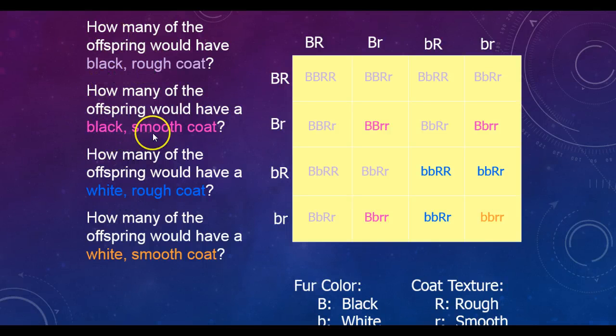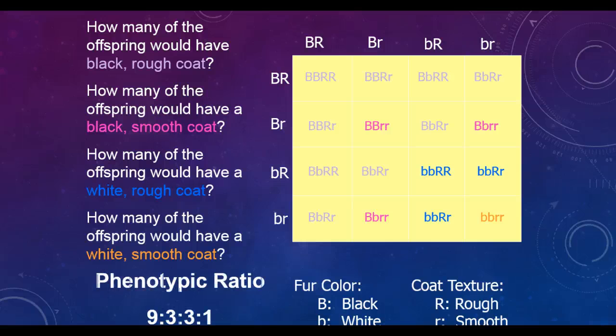We have black rough coat, black smooth coat, white rough coat, white smooth coat. As you can see, I color coordinated them. This is probably the hardest part because there's a lot of places where we can mess up. Please make sure that you got the same answer as that has been done here. And you should have got a 9 to 3 to 3 to 1 ratio, meaning that there's nine black rough coats, three black smooth coats, three white rough coats, and one white smooth coat.